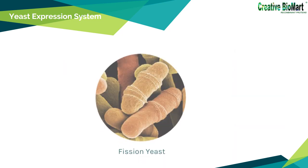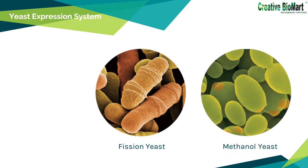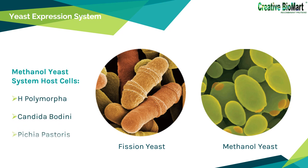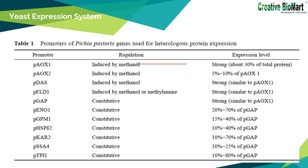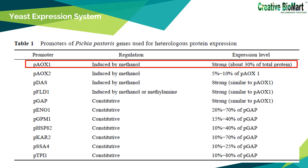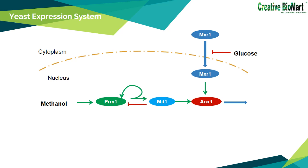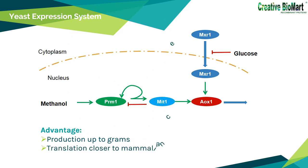Later, people developed fission yeast and methanol yeast systems. Among them, the methanol yeast expression system is currently the most widely used yeast expression system. The mainly used methanol yeasts are H. polymorpha, Candida boidinii, and Pichia pastoris. Pichia pastoris is the most popular tool. Most methanol yeasts contain the methanol oxidase gene AOX1, and the exogenous gene is expressed under the action of the promoter PAOX1. When glucose or glycerol is the carbon source, expression of the AOX1 gene in methanol yeast is inhibited; PAOX1 can be activated when methanol is the sole carbon source. Therefore, expression of the AOX1 gene can be increased under the control of this promoter. The use of methanol yeast to express exogenous proteins can yield production often up to grams. Compared with S. cerevisiae, its glycosylation pattern is closer to mammalian cells and does not undergo hyperglycosylation.